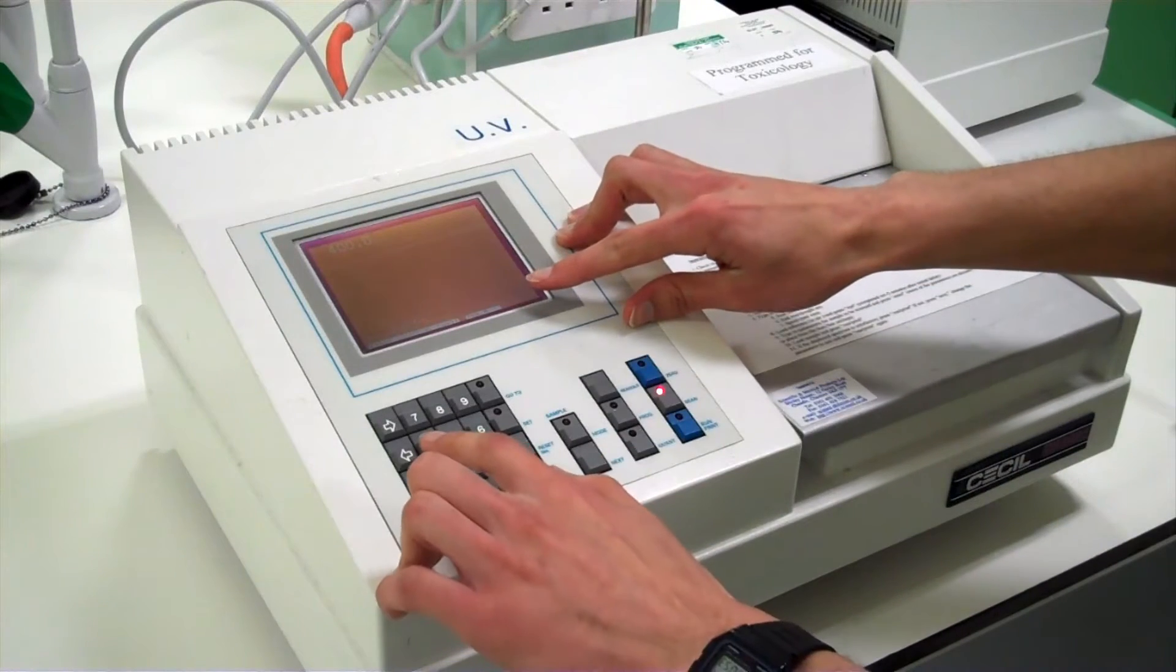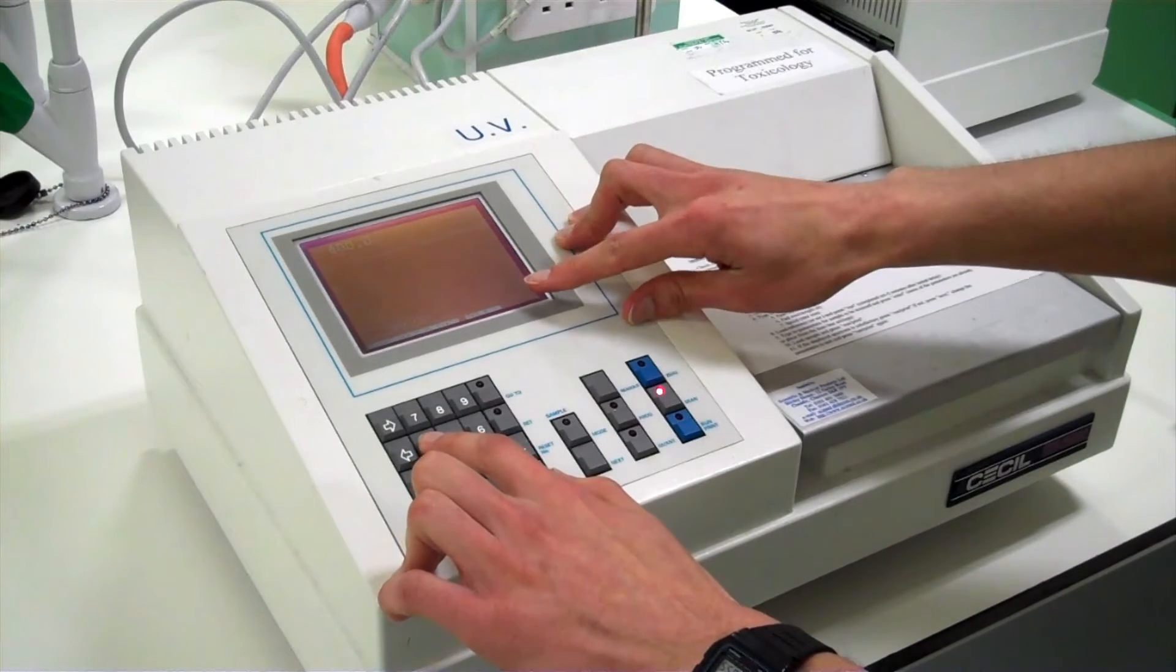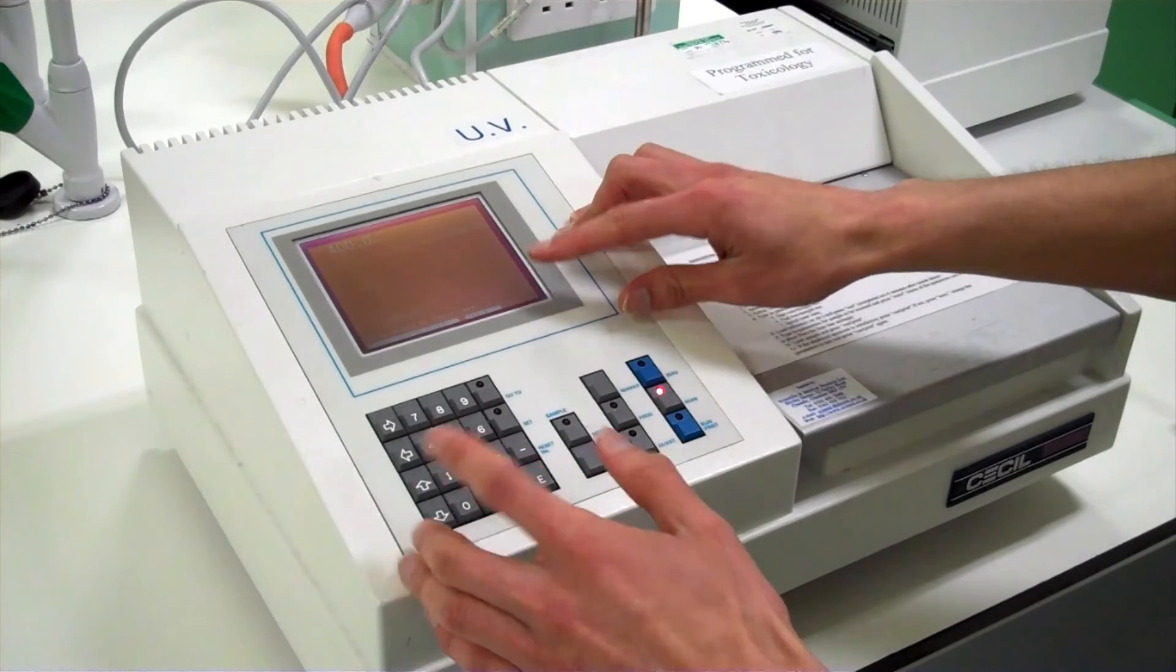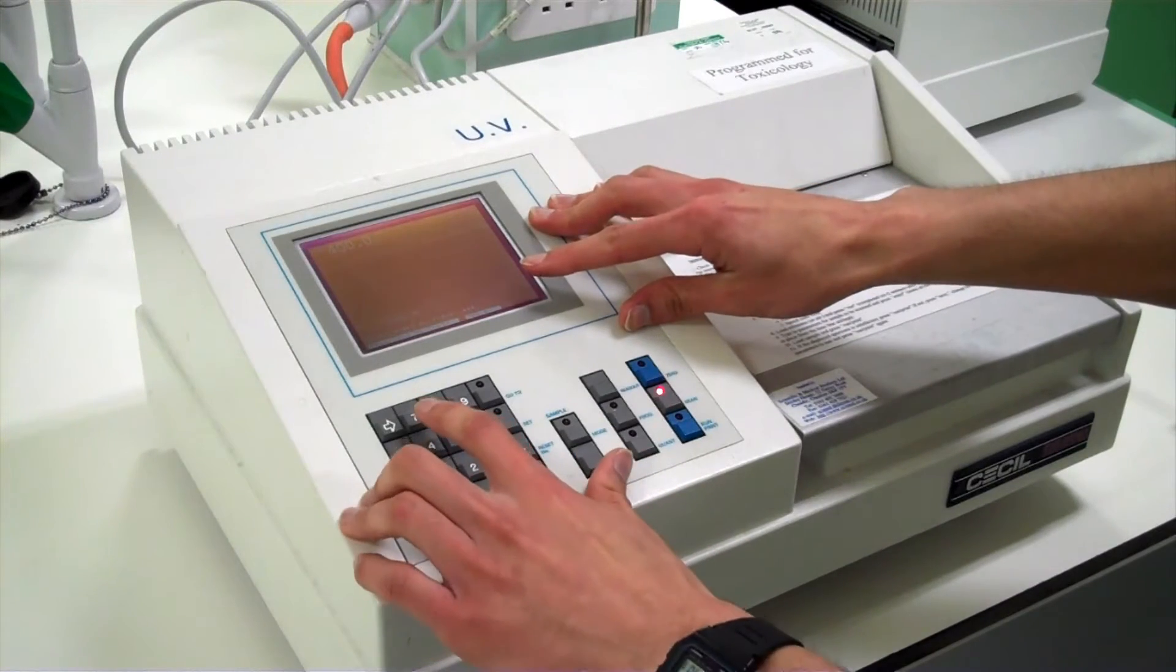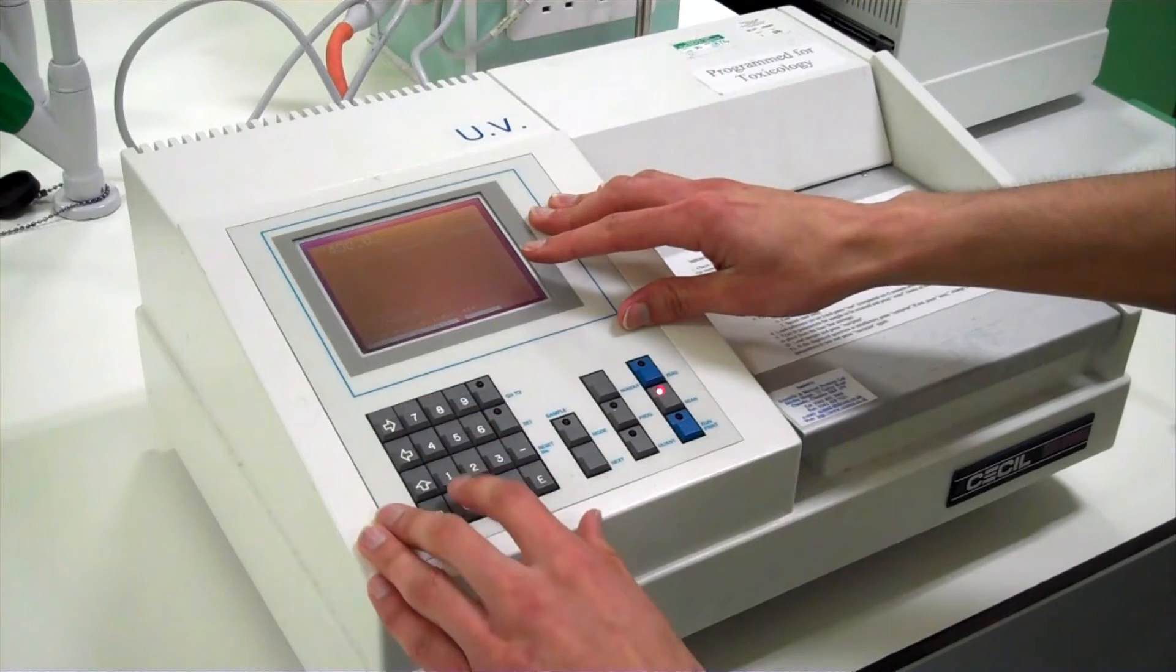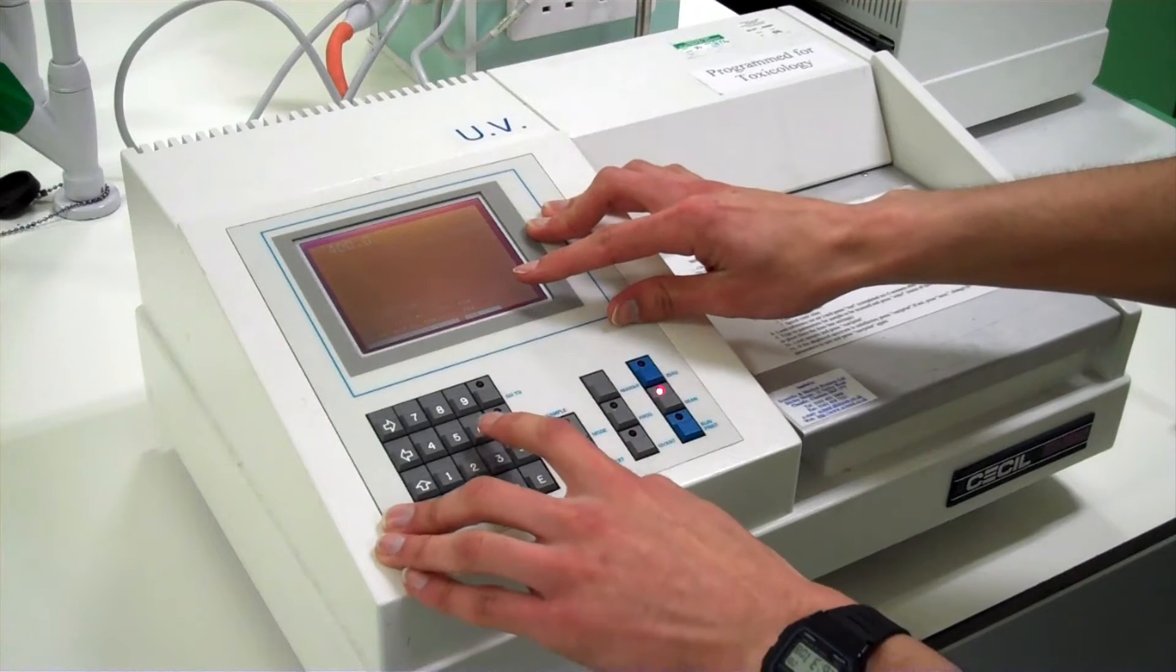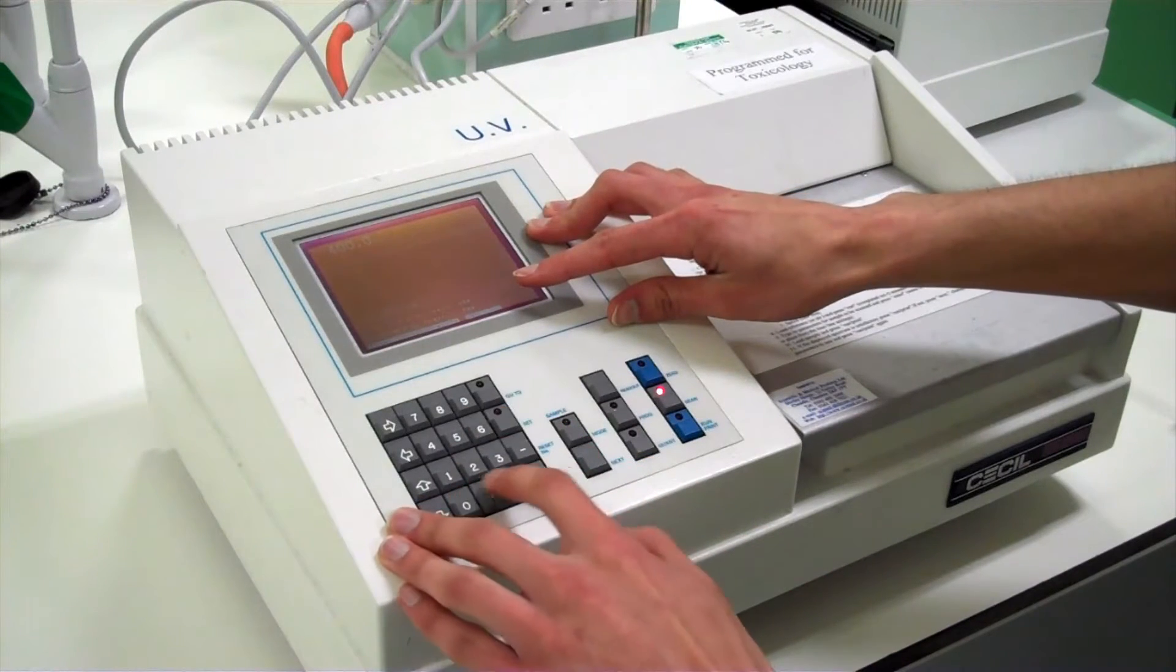We then enter the parameters. The wavelength we want the scan to begin with is 400 nanometers and enter. The wavelength we want to end our scan with is 700 nanometers. Press enter and the speed 600 nanometers per minute and enter again.